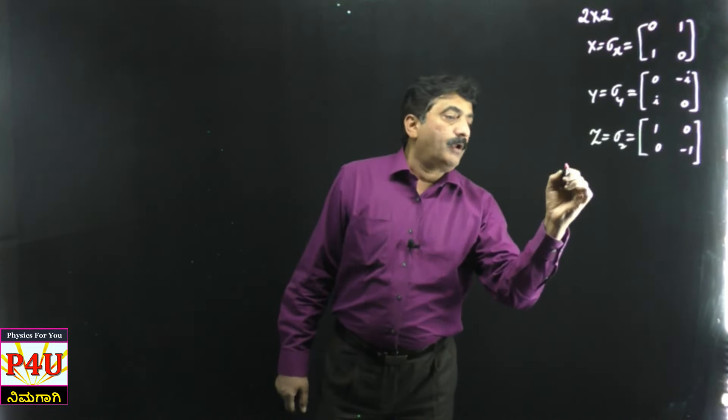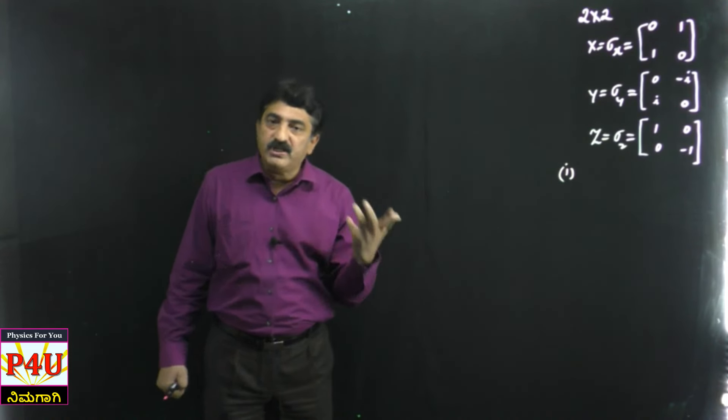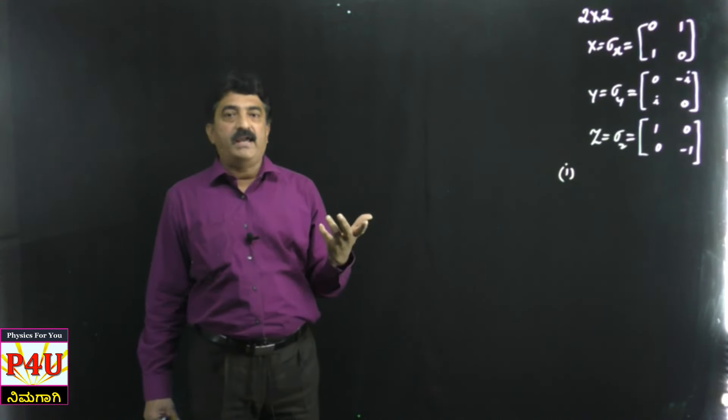Now let me first explain the properties of Pauli matrices. There are two important properties. Property number one: any of these three matrices is Hermitian. You know how to write the Hermitian - first you take the complex conjugate and then transpose. It is going to give you the Hermitian.